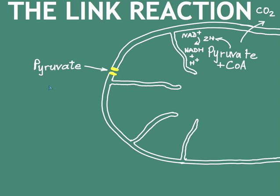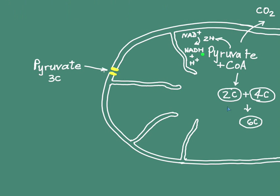The link reaction links glycolysis, which occurs in the cytoplasm of the cell, with a cycle of reactions that occur first in the matrix of the mitochondrion, and then leads on to reactions that happen on the cristae of the mitochondria. This cycle of reactions that happens in the matrix begins with the two-carbon structure that forms from pyruvate and its association with coenzyme A, combining with a four-carbon molecule to produce a six-carbon molecule.